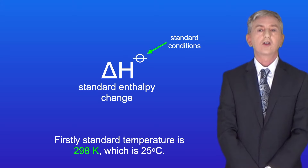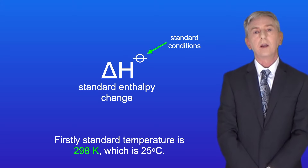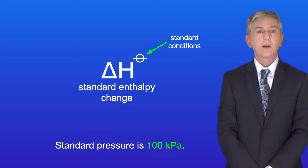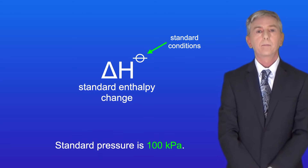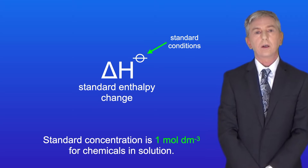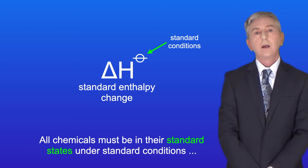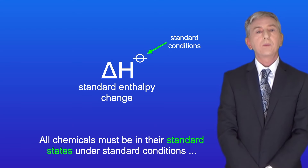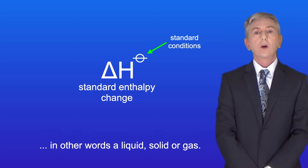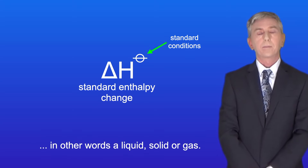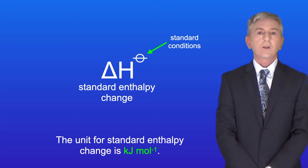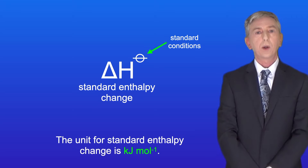Firstly, standard temperature is 298 Kelvin, which is 25 degrees Celsius. Standard pressure is 100 kilopascals. Standard concentration is one mole per decimeter cubed for chemicals in solution. And finally, all chemicals must be in their standard states under standard conditions — in other words, a liquid, solid, or gas. The unit for standard enthalpy change is kilojoules per mole.